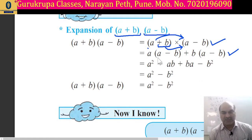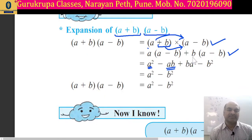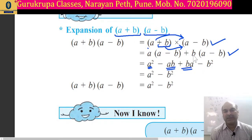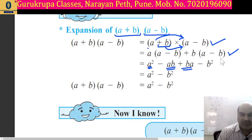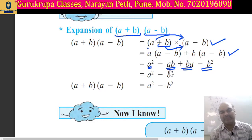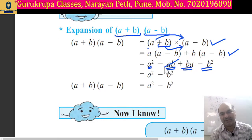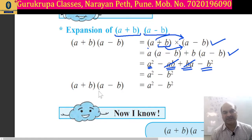So a into a gives a square. Then a into b gives ab, and minus ab. For the second bracket, b into a plus b gives ba, and b into minus b gives minus b square. Now the middle terms minus ab and plus ab cancel each other. So we get the final answer: a square minus b square.